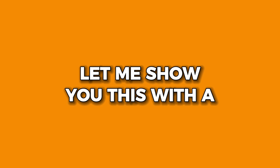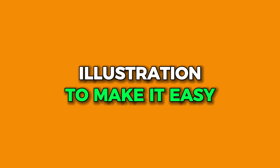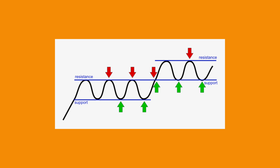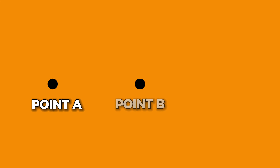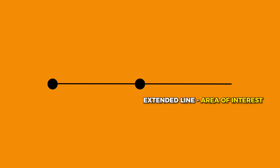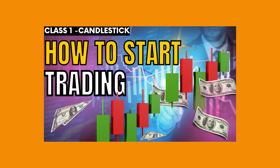Now that you have understood how to identify support and resistance, let me show you this with an illustration. To spot a support or resistance, you require an area from where the price has bounced, so you will need at least two such points. Assume you have identified point A and point B — connect both points and extend the line. This extended line will be the area of interest where you will take short and long trades, along with candlestick confirmations.